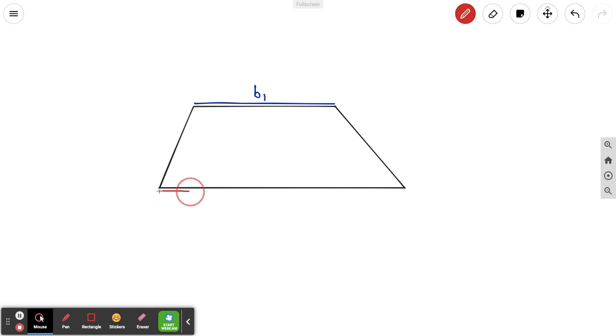My other base is here. So on a trapezoid, the two bases are the two sides that are parallel to each other. So there's my base two.